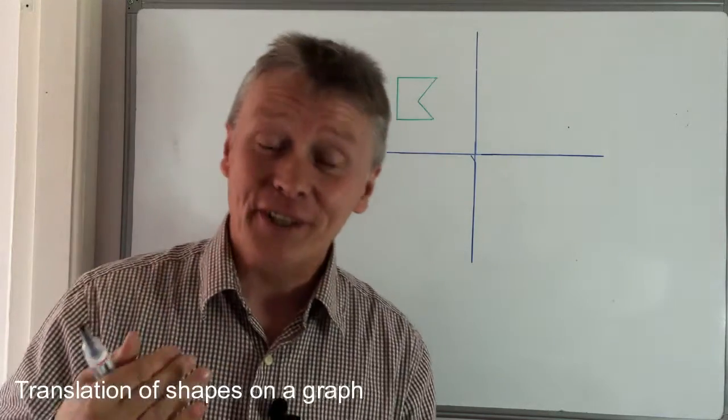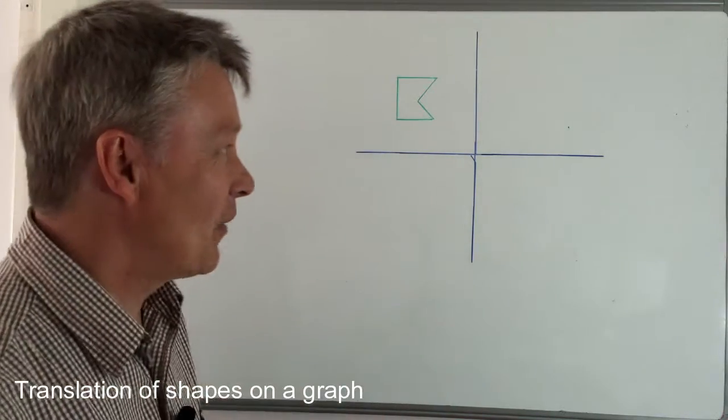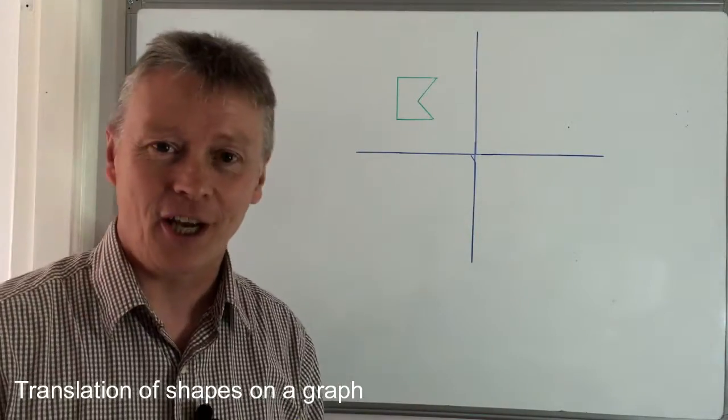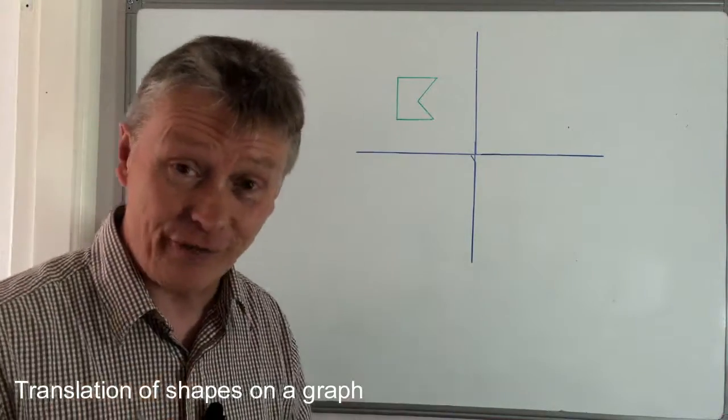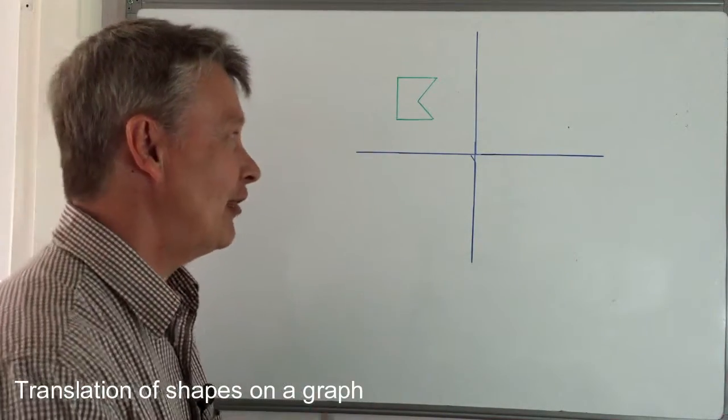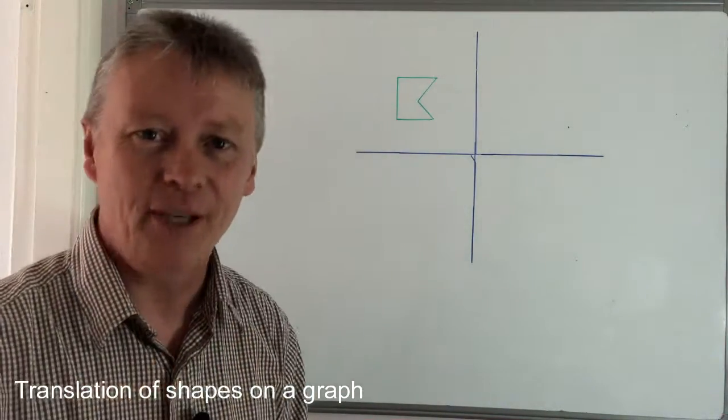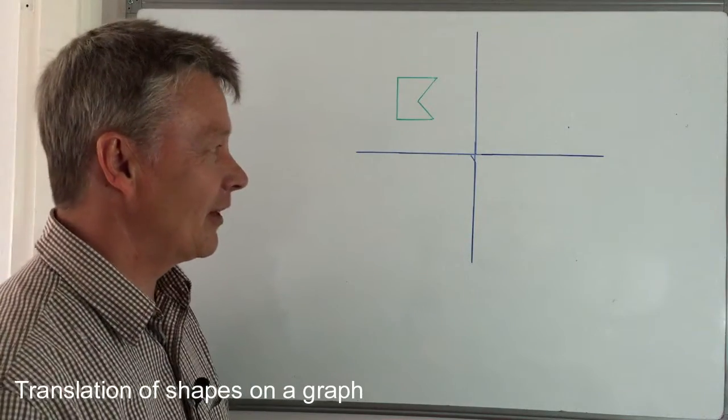In the previous two examples we looked at translating a shape A - it was a triangular shape and we moved it by a vector. This is just the final one to give you a final exam paper type question that you're going to get.